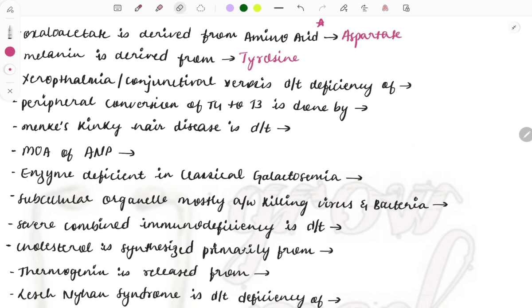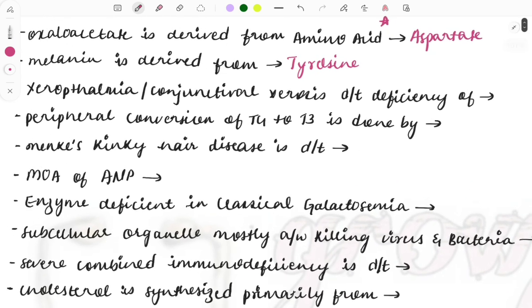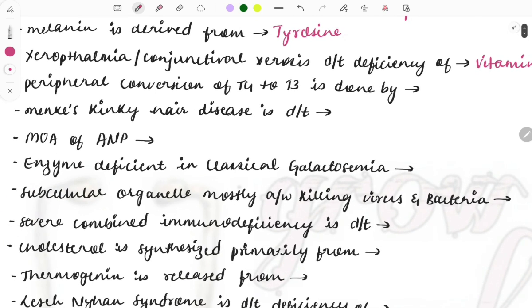Xerophthalmia or conjunctival xerosis occurs due to deficiency of which vitamin? It is vitamin A. Vitamin deficiencies and the functions of the vitamins, again a repeat topic, so note it down. Vitamins is a must-do from biochemistry. You will be surely getting three or four marks easily if you do the vitamins.